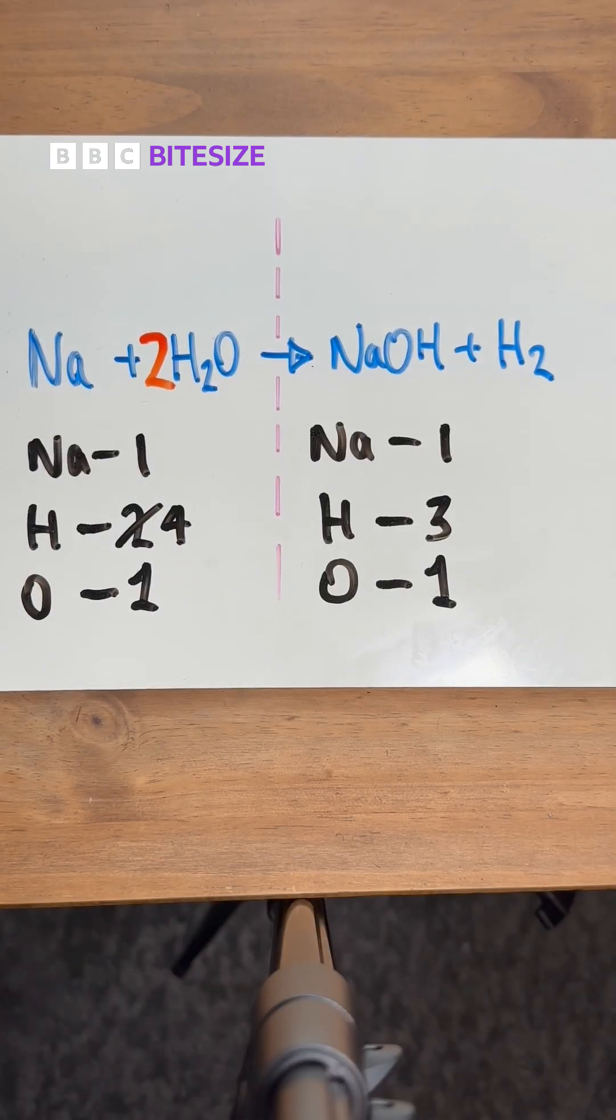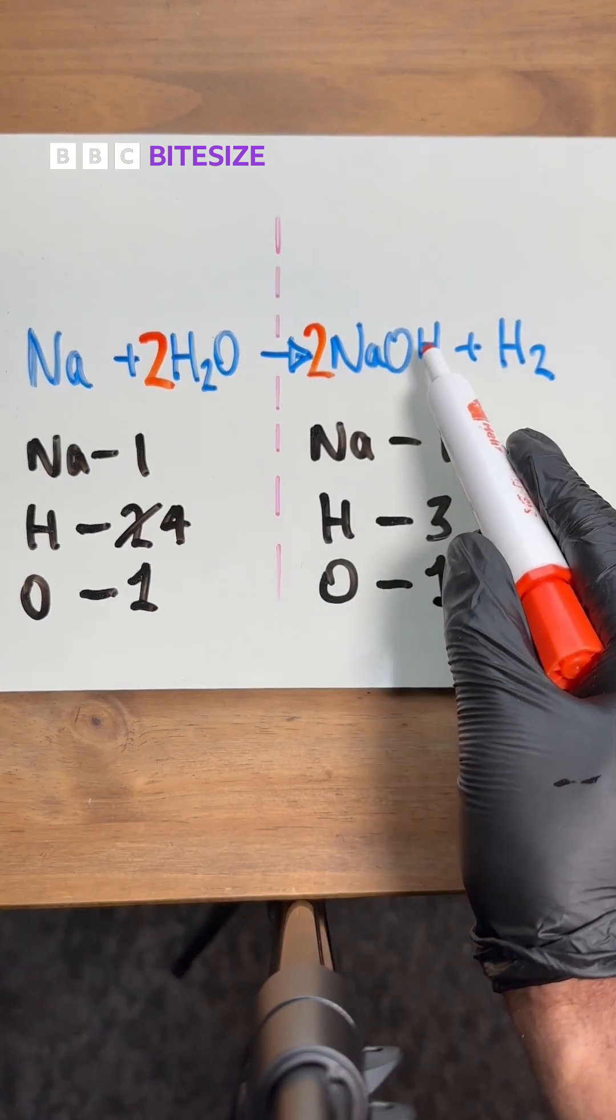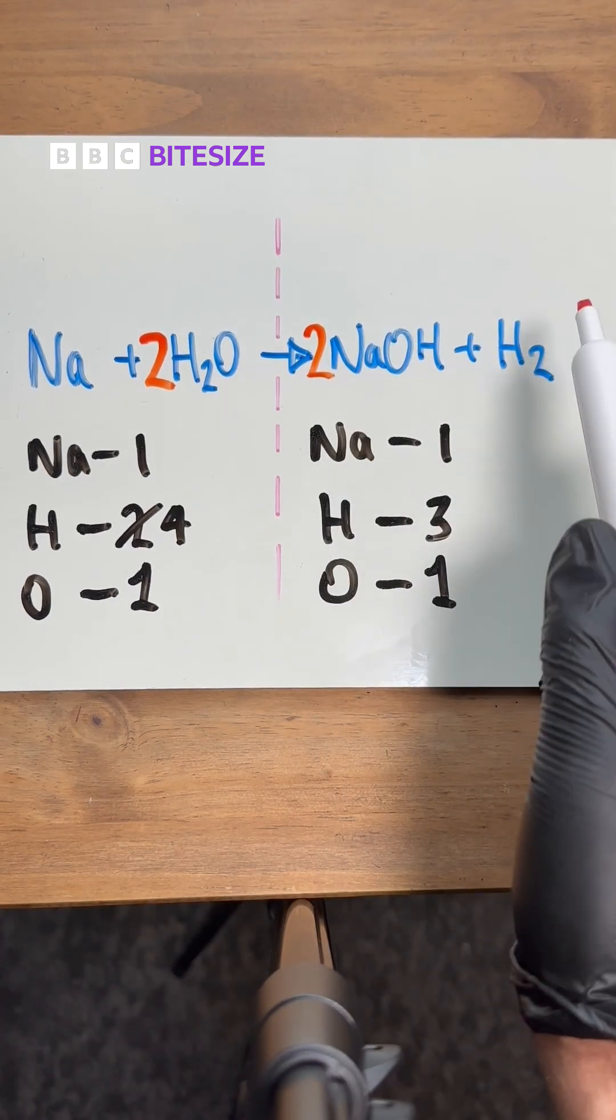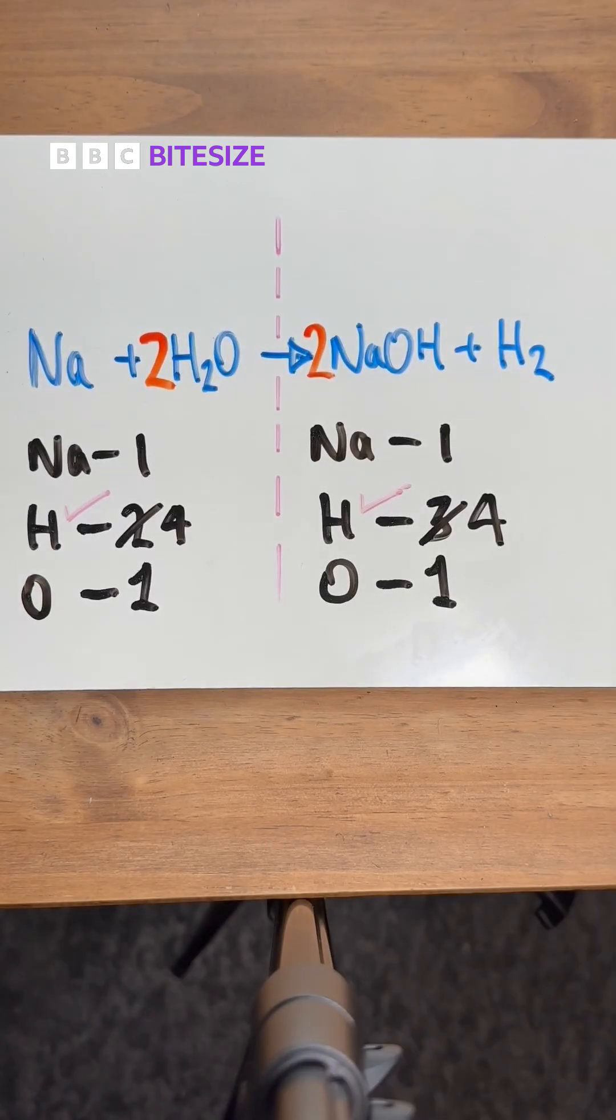But look, now on the right we've only got three, so we've got to put a two in front of the sodium hydroxide as well. That makes two hydrogens here plus the other two there, that equals four. So hydrogen, that's balanced, we've got four on each side.